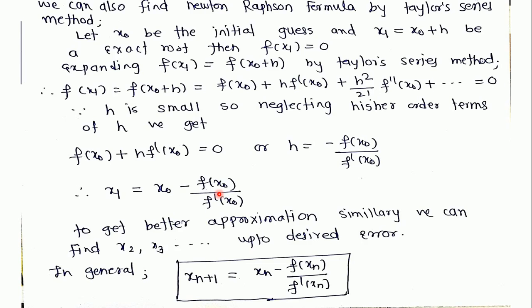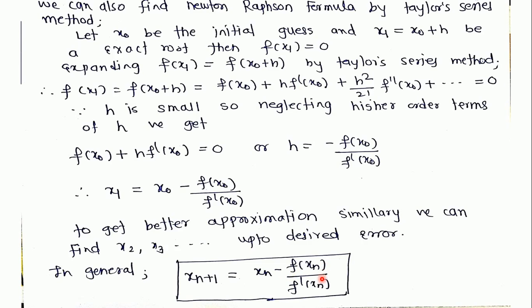To get better approximations similarly we can find the next iterations also, x2, x3 and so on. In general we can say that xn+1 equals xn minus f(xn) upon f'(xn). This formula and this formula both are the same but only methods are different.